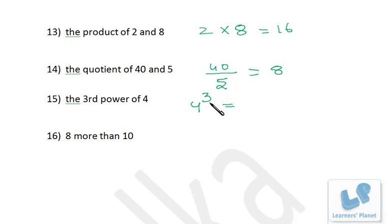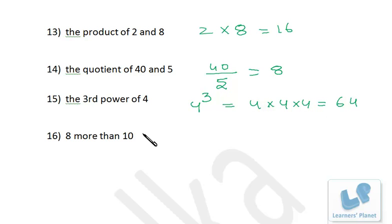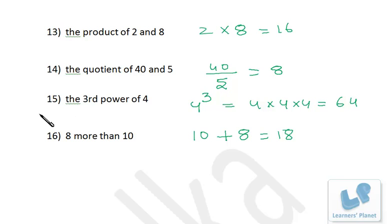The third power of 4 is 4 cubed: 4 into 4 into 4, that is 64. 8 more than 10 is 18. So you find it's very easy to convert a verbal expression into an algebraic expression, and after that evaluation is also very easy.